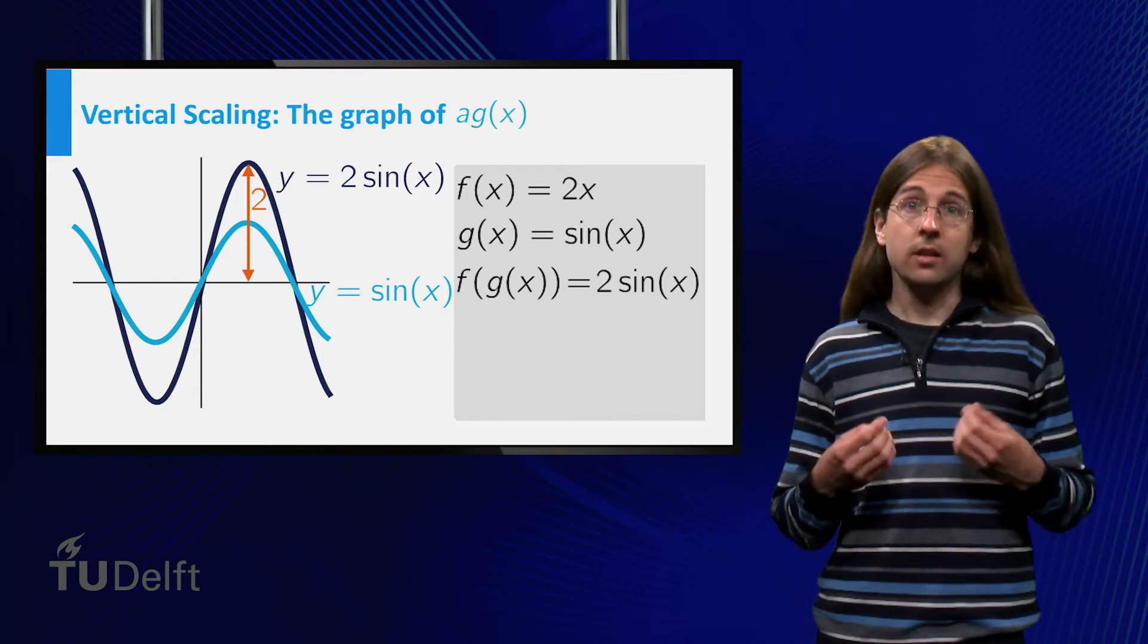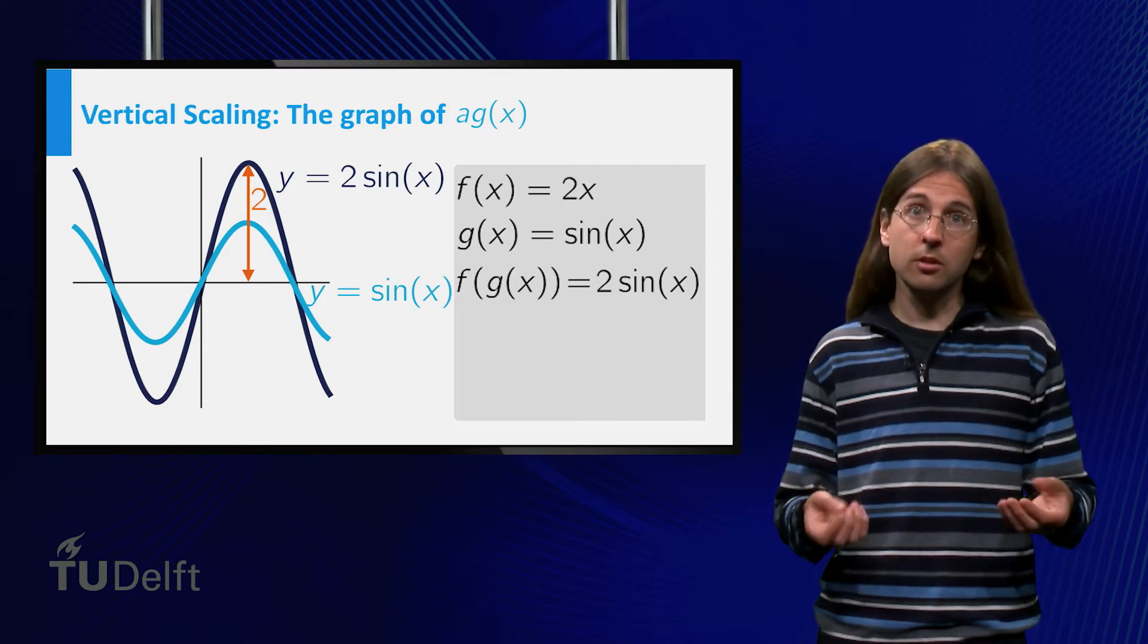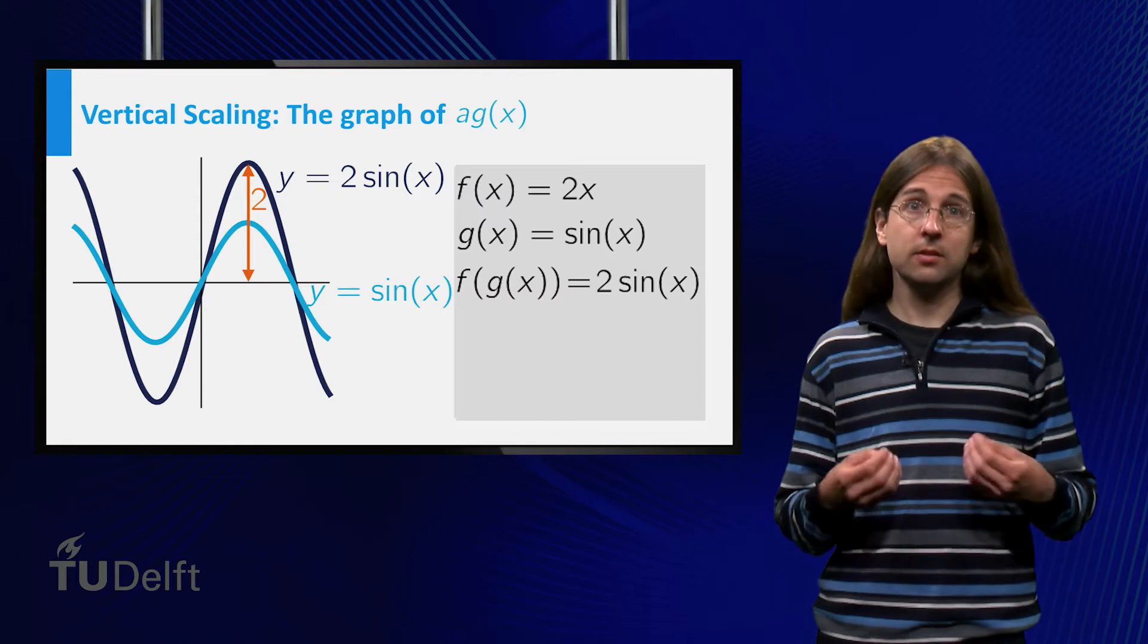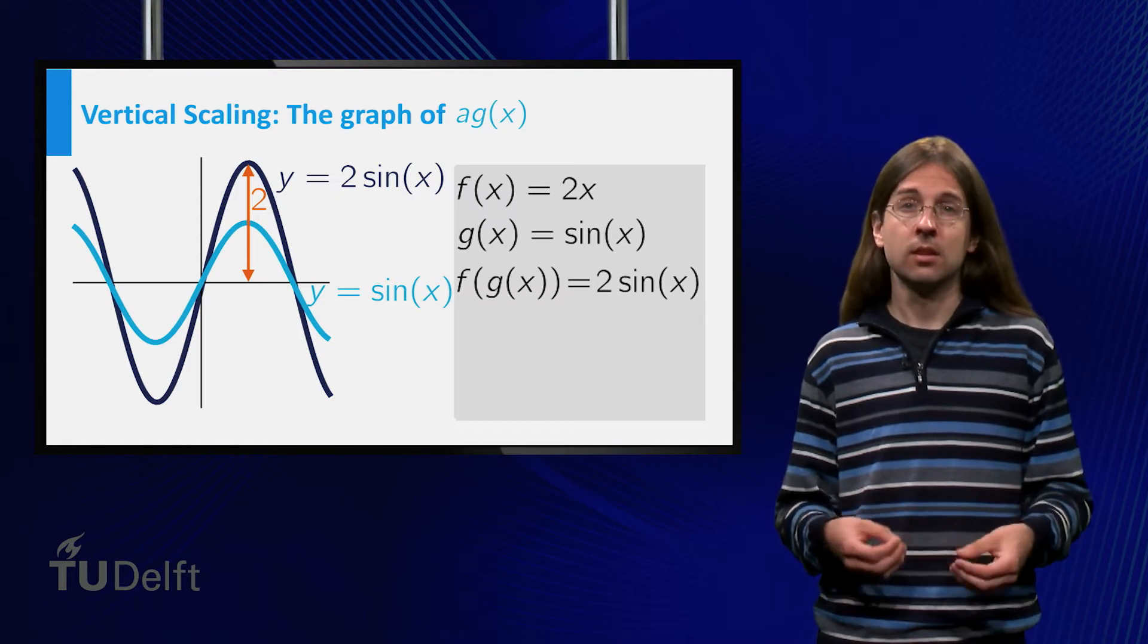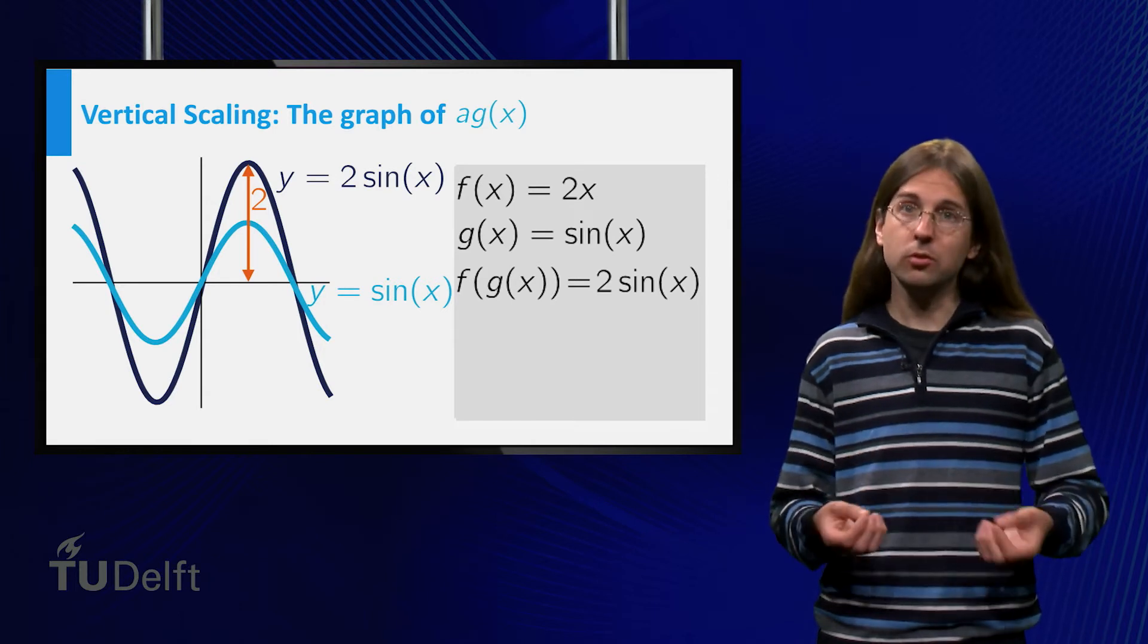Indeed, in general, the value of f of g of x equals 2 times g of x is twice the value of g of x, thus the distance of the graph to the x-axis is multiplied by 2.